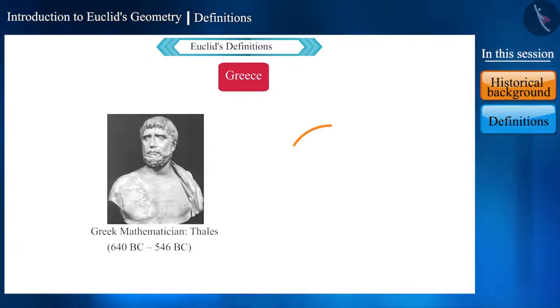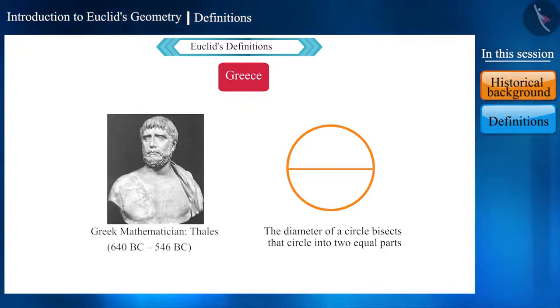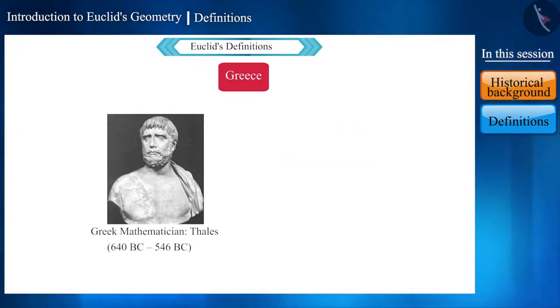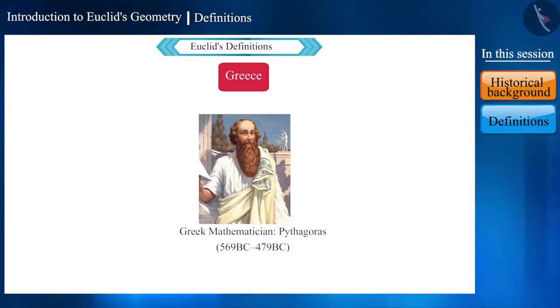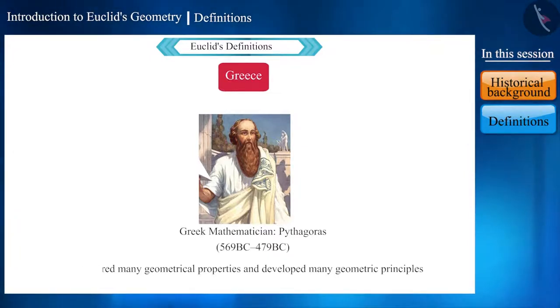But people of civilizations such as Greece showed great interest in the arguments behind geometry. The Greek mathematician Thales first provided the fact that the diameter of a circle bisects that circle into two equal parts. Friends, you would have heard the name of Greek mathematician Pythagoras. He was Thales' disciple. Pythagoras and his comrades together discovered many geometrical properties and developed the principles of geometry.